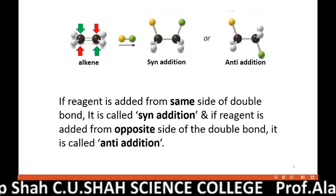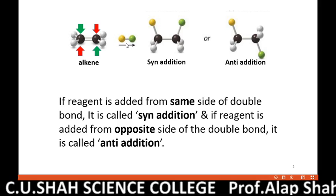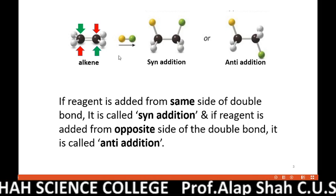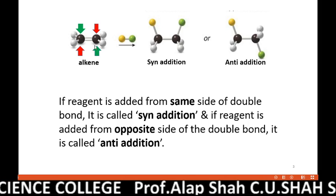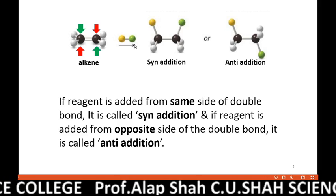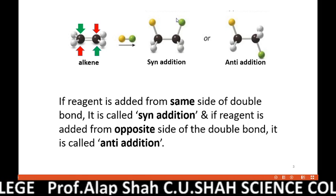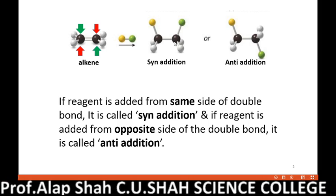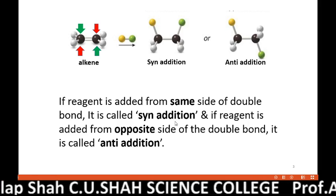You can see in the figure: this is a doubly bonded compound and this is one reagent, shown with color code yellow and green. Doubly bonded carbons are sp2 hybrid carbons and the shape is planar — the double bond is always flat and planar. Here you can see that both the yellow and green groups are added to the double bond from the same side, from the same plane, and the double bond turns into a single bond. When the reagent is added from the same side of the double bond, it is called a syn addition reaction.